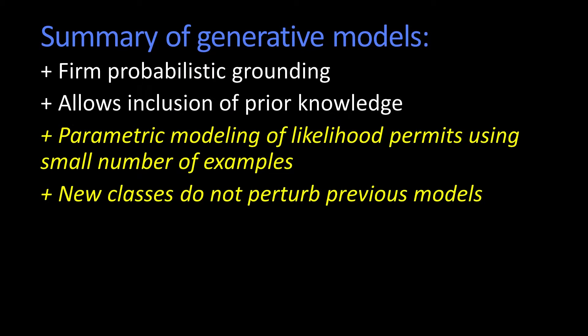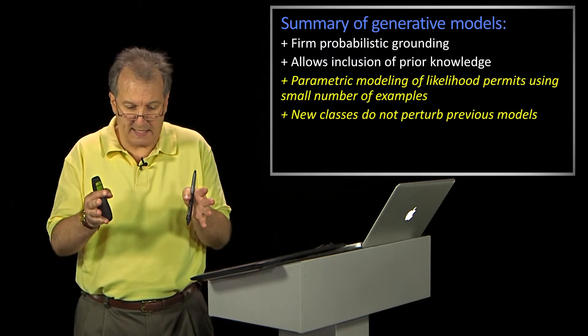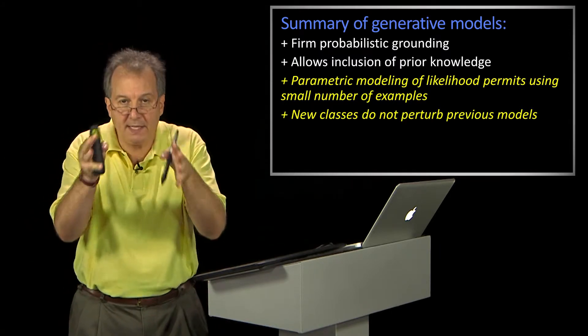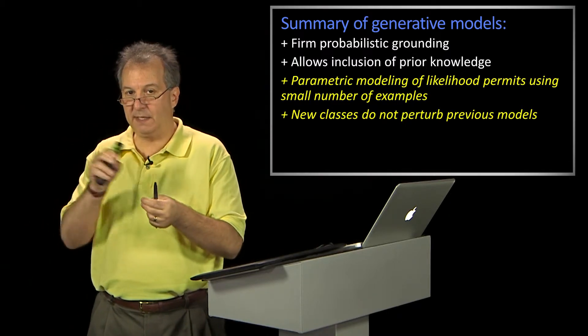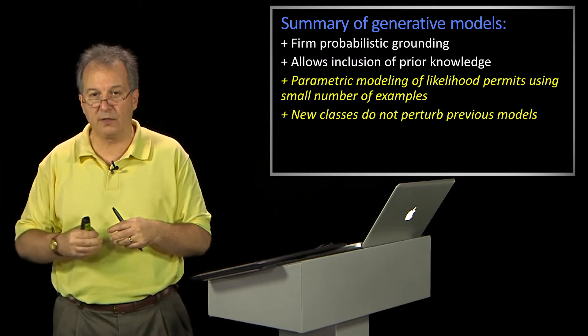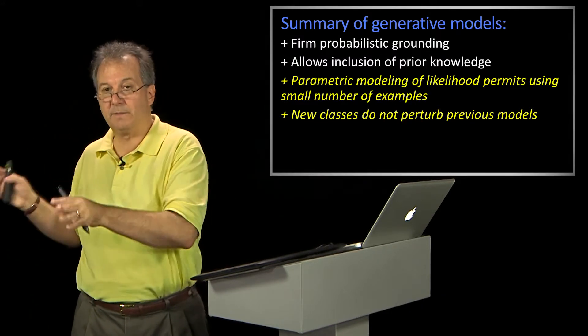There are two highlighted points here because they're important. One is that because you're doing parametric modeling of continuous functions, you can get away with using a pretty small amount of data compared to discriminative methods. The second good thing is your models are about each category and just that category. So when you encounter a new category, you just learn a model for it. Whereas with discriminative methods, adding category D means you have to worry about A vs. D as well.